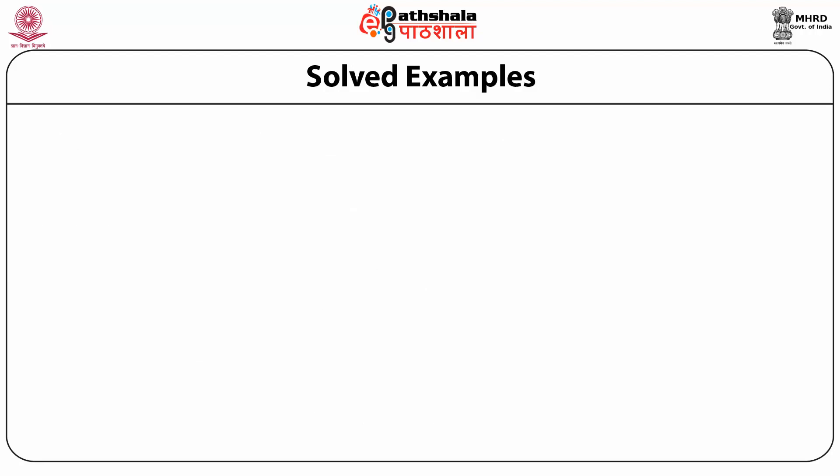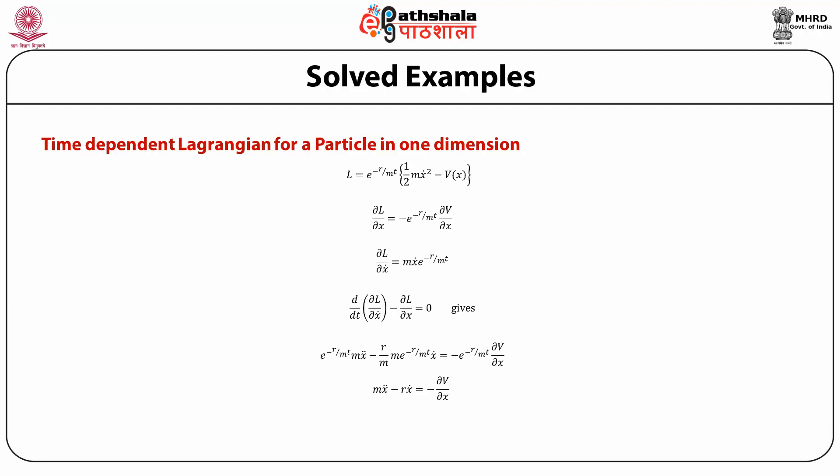Now we take an example where the Lagrangian of a particle is time dependent. We consider a simple case where the particle is moving in one dimension and the Lagrangian is given by exp(−gamma/m · t) multiplied by [(1/2)m x-dot² − V(x)]. So (1/2)m x-dot² − V(x) is the Lagrangian of a particle moving in the presence of a potential V(x) in one dimension, and this whole thing is multiplied by exp(−gamma/m · t) which makes the Lagrangian time dependent. The partial derivative of this Lagrangian with respect to x is equal to −exp(−gamma/m · t) dV/dx. Likewise, the partial derivative of L with respect to x-dot is m x-dot · exp(−gamma/m · t).